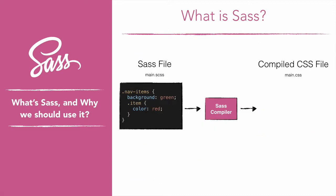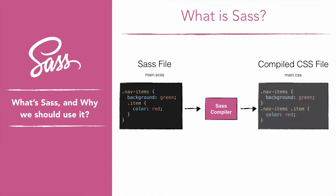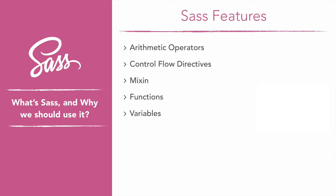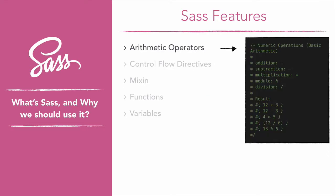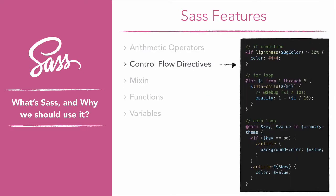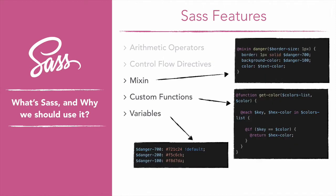SASS is an extension to CSS. It doesn't change anything in the core language of CSS. It simply helps to provide some basic functionalities that CSS lacks, like arithmetic operators, flow control directives, and some other functionalities that you will discover in this course.